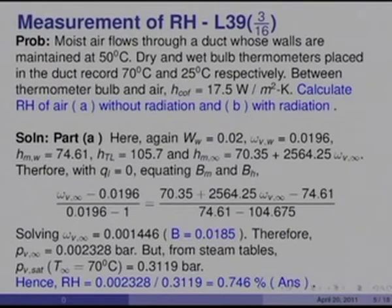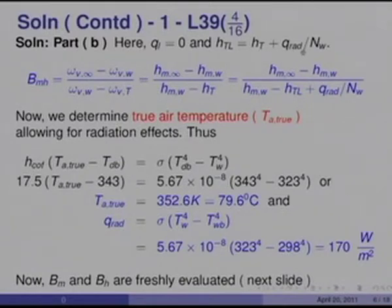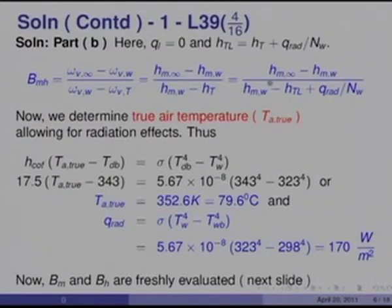In part B, we allow for radiation. At the wet bulb, Q_L = 0 and H_TL becomes H_TL + q_rad/n_w, so B_m = (H_m_infinity − H_m_w) / (H_m_w − H_TL − q_rad/n_w). We must also determine the true air temperature since the dry bulb reading is affected by radiation from the duct wall at 50°C.